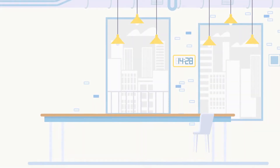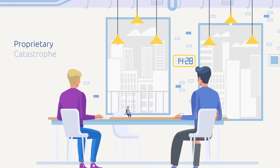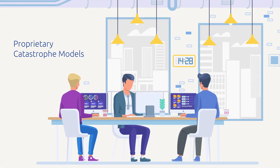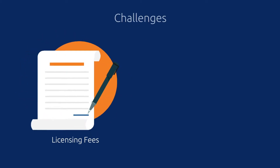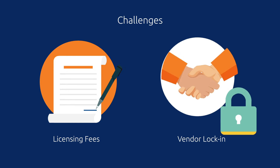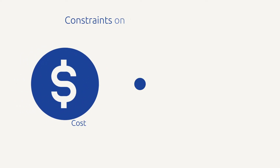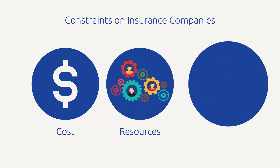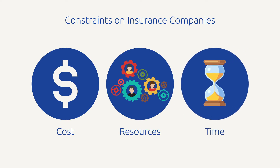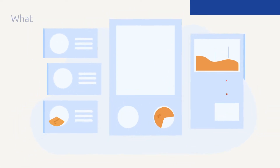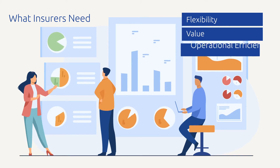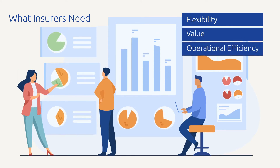Every year, insurance organizations invest in proprietary catastrophe models provided by conventional industry modelers. Those solutions often include hefty annual licensing fees and considerable vendor lock-in. But with increasing constraints around cost, resources, and time, insurers are looking for flexibility, value, and operational efficiency in their cap modeling.